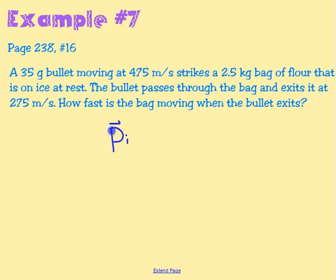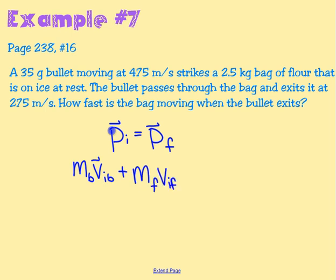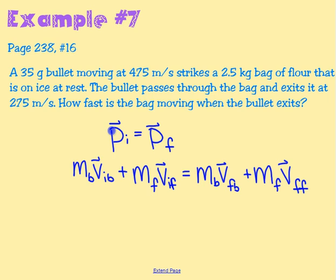Again, we know initial momentum equals final momentum. That gives us: mass of the bullet times V-initial of the bullet, plus mass of the flour times V-initial of the flour, equals mass of the bullet times V-final of the bullet, plus mass of the flour times V-final of the flour. The bag of flour is initially at rest, so that entire term goes to zero.